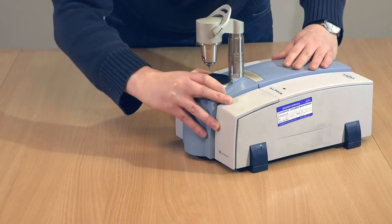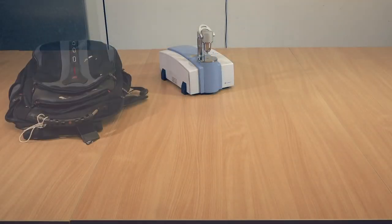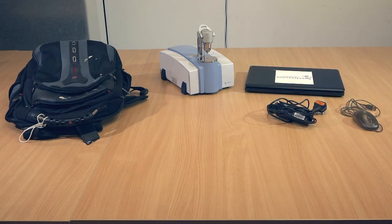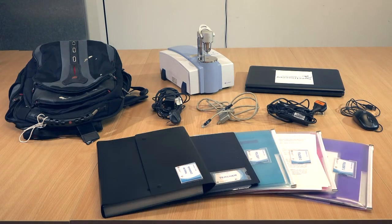Everything else is in the rucksack. It should contain a laptop with power supply and mouse, a power supply for the spectrometer, an ethernet cable and adapter for connecting the spectrometer to the laptop, and teaching materials for the workshop.